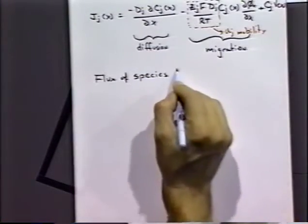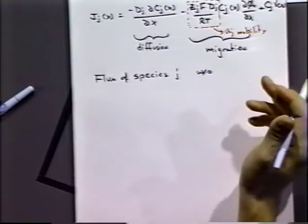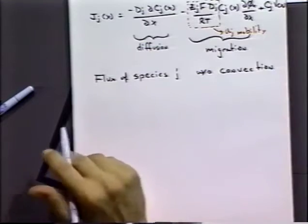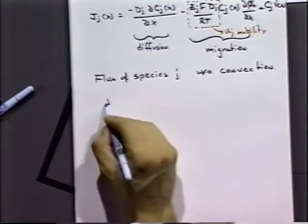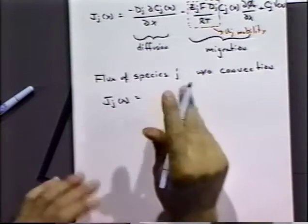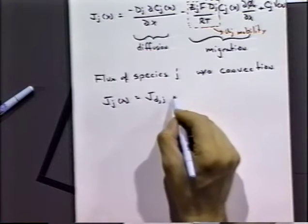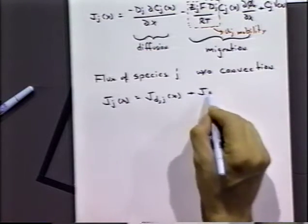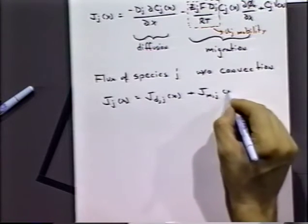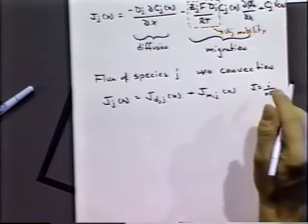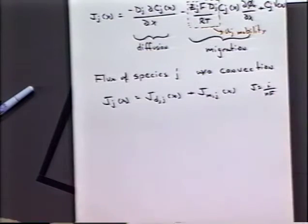Let's look at a situation where we consider the flux of species J with both diffusion and migration, since we can eliminate convection simply by not stirring the solution. Eliminating migration and diffusion requires more drastic steps. A flux of species J in the x direction will be composed of two components: a diffusional component and a migrational component of species J in the x direction. The flux J is proportional to or equal to the current over NFA in this particular case.